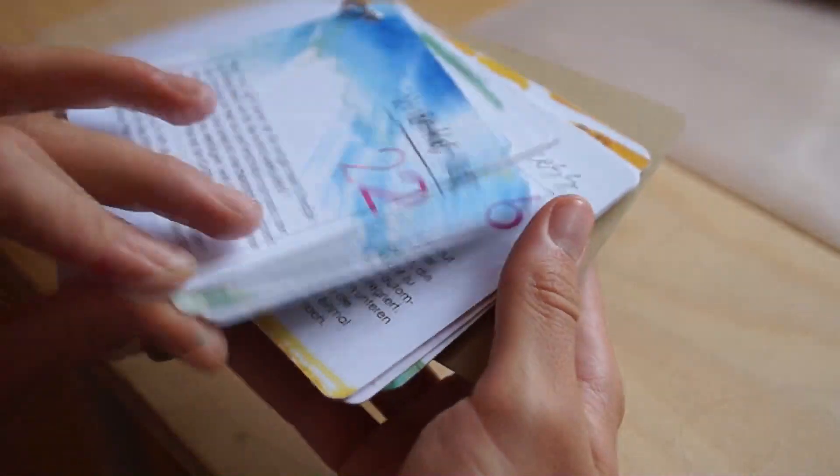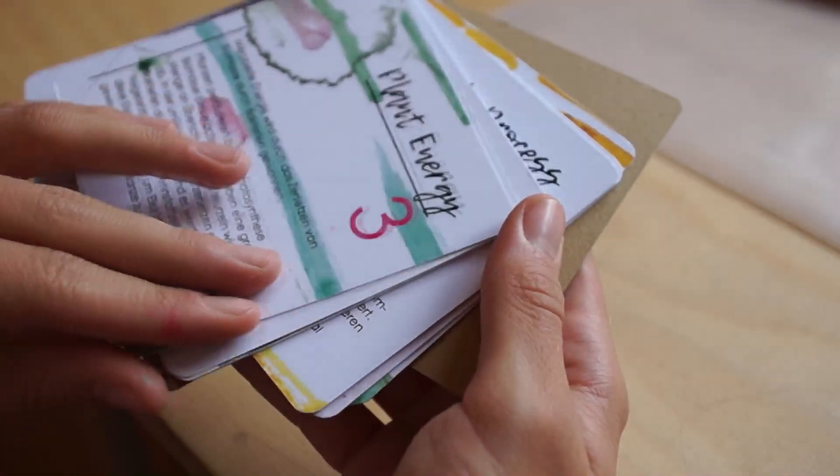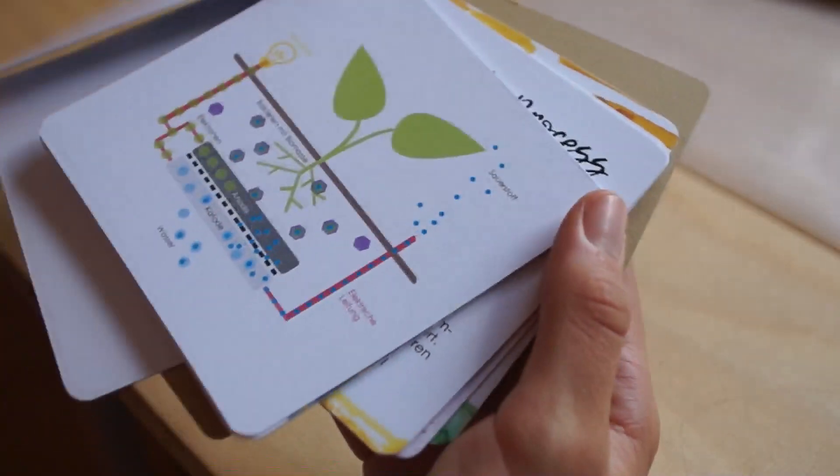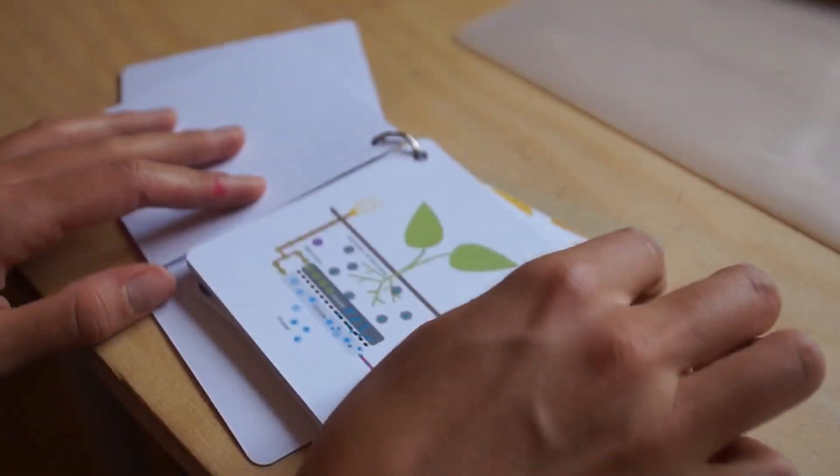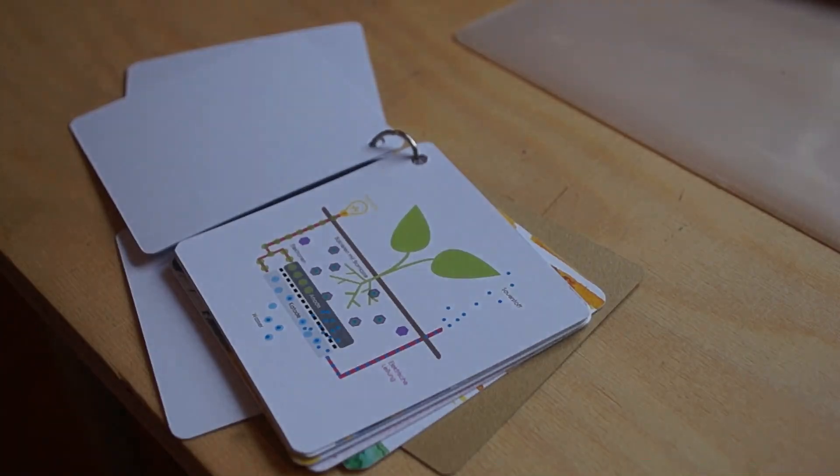Imagine the energy we use could be produced by living plants. Plant Your Light is the concept of a do-it-yourself kit that enables you to create electricity with plant microbial fuel cells.